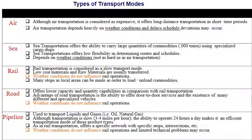There are five types of transportation modes: first, air; second, sea; third, rail; fourth, road; and fifth, pipeline. For air transport, it is generally expensive but provides short transportation time and can transport products over long distances.